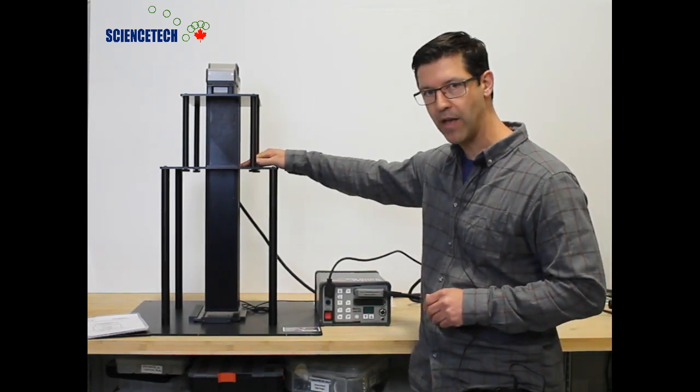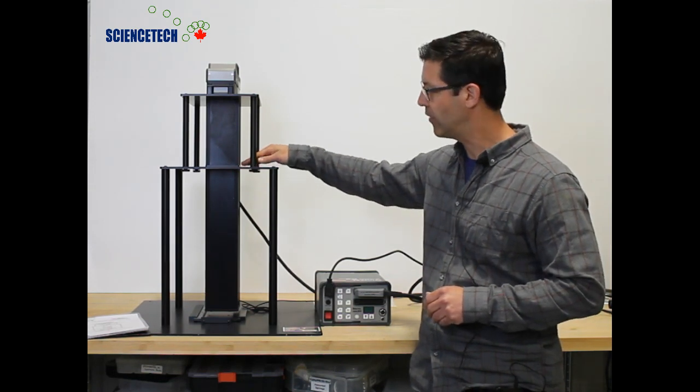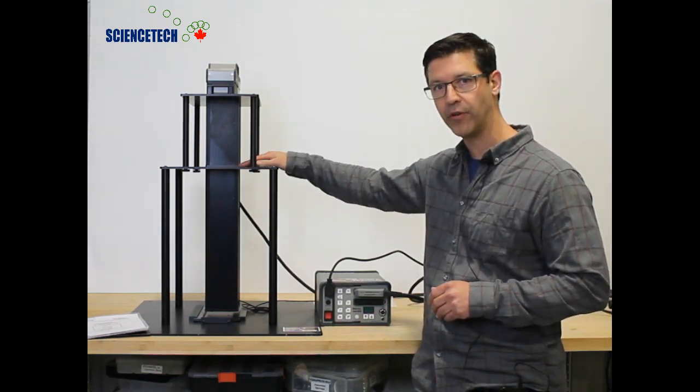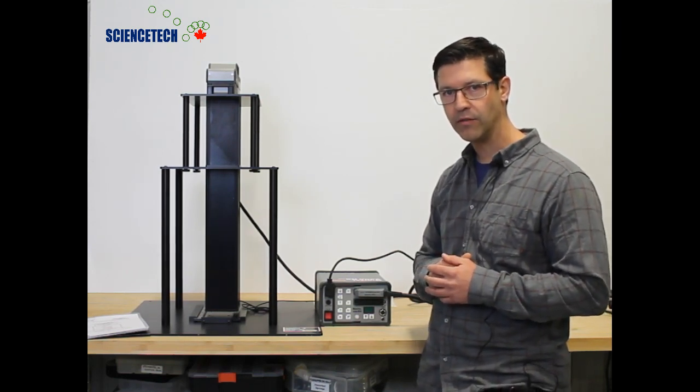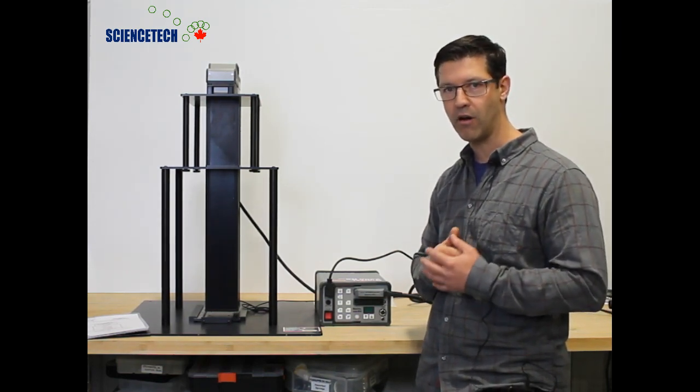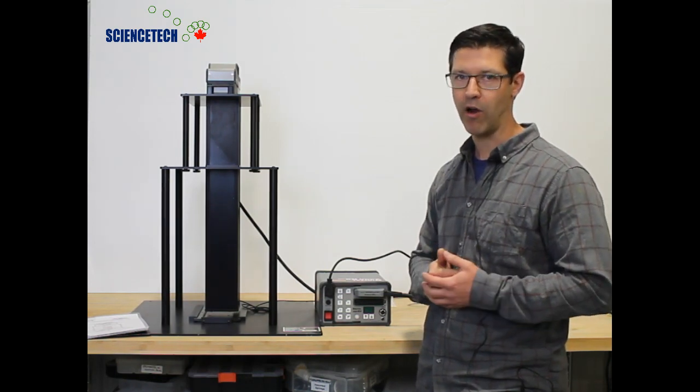At the middle of the FSSC-4000 we have a location here where a filter can be placed. Filtering in a flash lamp system is a very important concept to get across.